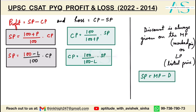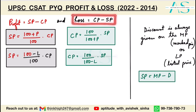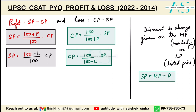If you have a loss, it means you did not recover as much as you invested — your cost price is greater than the selling price. So CP minus SP is used to calculate loss, and SP minus CP is used to calculate profit.